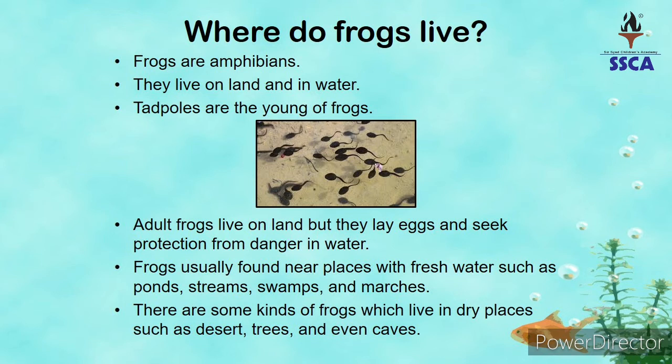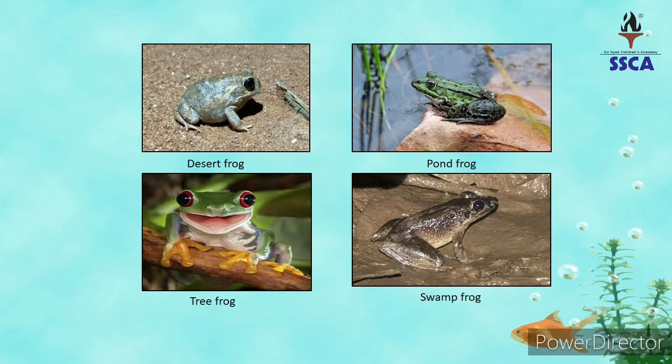Tadpoles are the young of frogs. Tadpoles hum frog ke babies ya unke young ones ko kehte hain. Adult frogs live on land but they lay eggs and seek protection from danger in water. Agar aap first picture dekhein toh woh desert frog ki hai, second picture mein pond frog hai, third picture mein tree frog hai, aur fourth picture mein swamp frog hai.